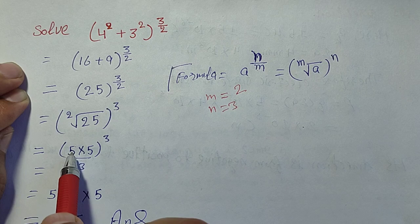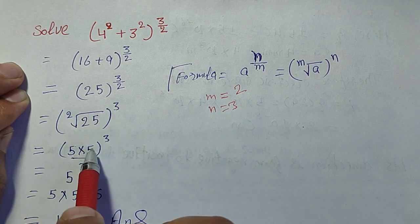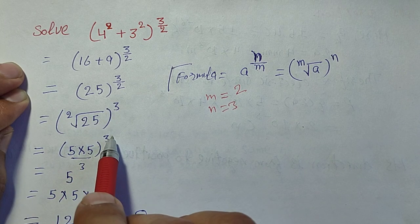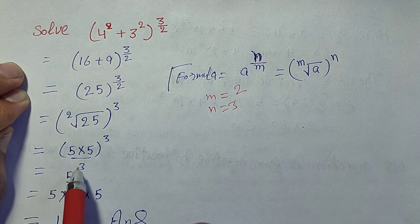The square root of 25 is 5 times 5, and all raised to power 3.